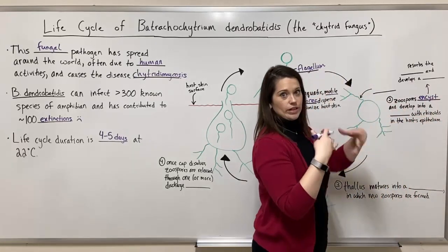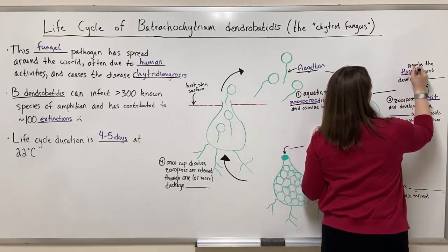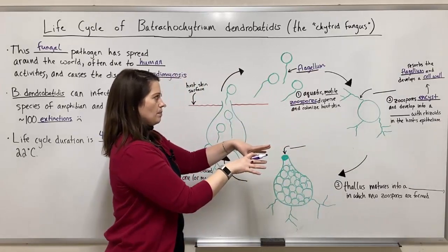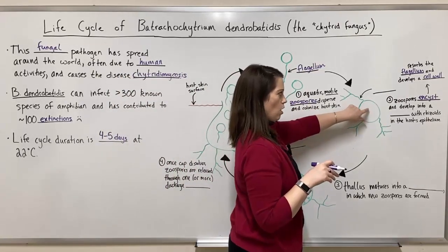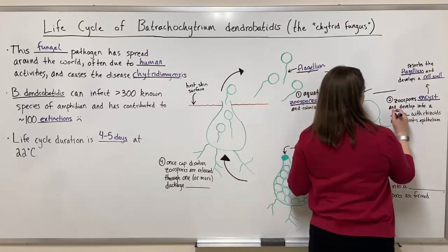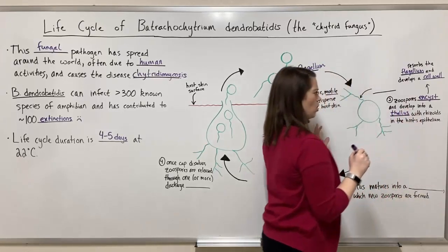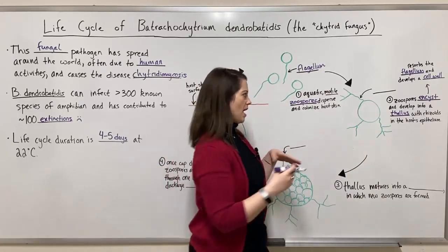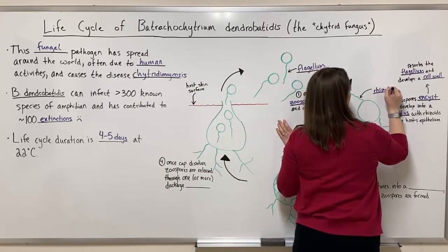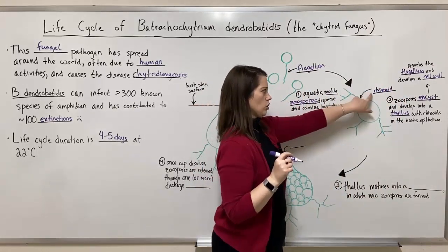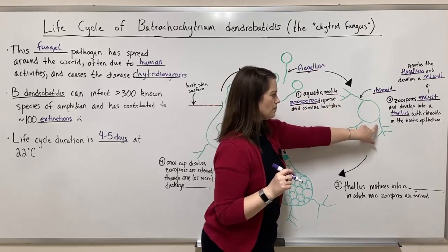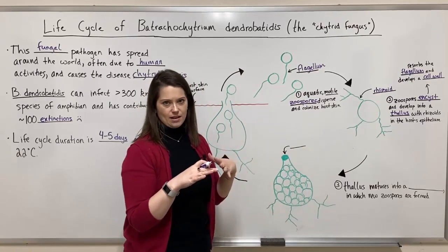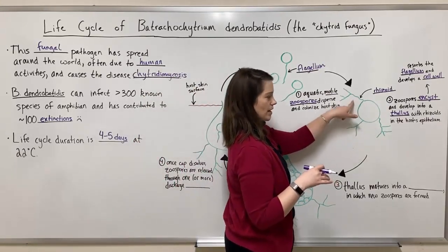Once the zoospores find some host skin to land on — amphibian skin — the zoospores will encyst. Encysting means they resorb the flagellum and develop a cell wall. That's called encysting or encystment, and they develop into the next life stage called a thallus. The plural of thallus is thalli. They have these structures called rhizoids — filamentous appendages that help with attachment. Even growing these in culture with no host skin, you can still see these rhizoids under a microscope.